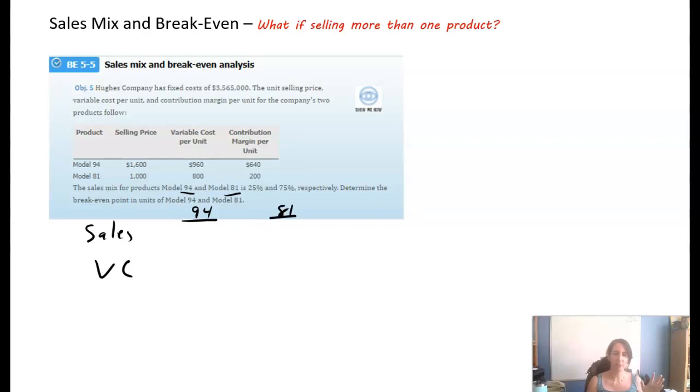So what we do is, I'm going to set it up this way. Sales, variable costs. We've got two products, 94 and model 81. I don't know why they don't give them something fun as a name, like apples and oranges. 94 and 81, kind of lame, but I'm not the one who makes up the problems. So the sales price for 94 is $1,600, and the sales price for 81 is $1,000. Variable costs, $960 a unit and $800 a unit.